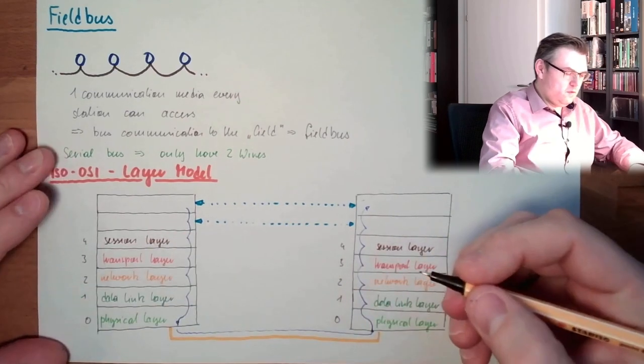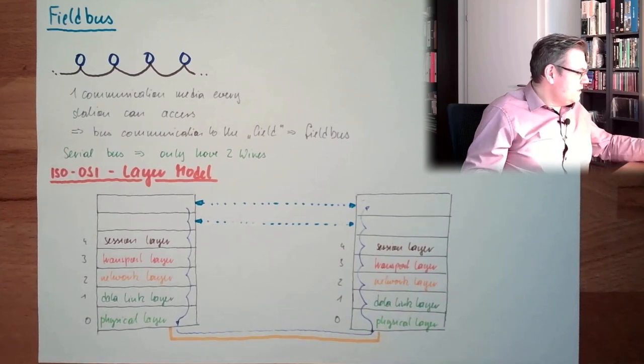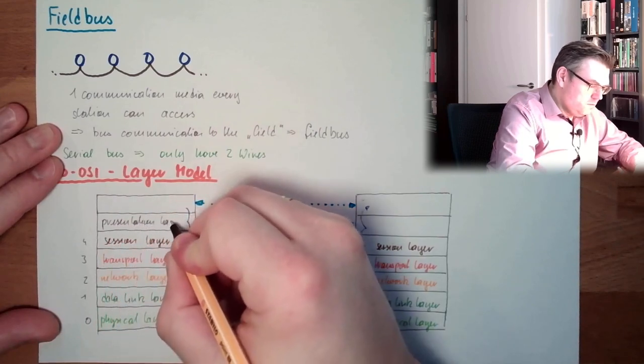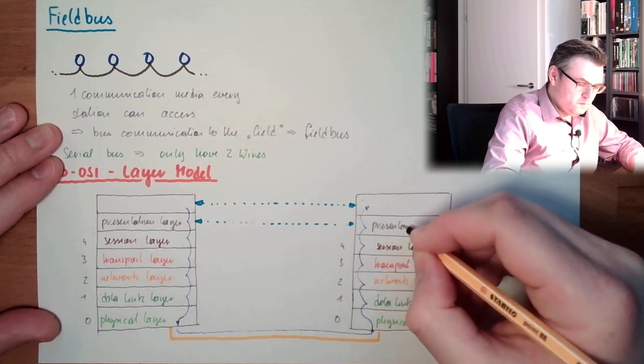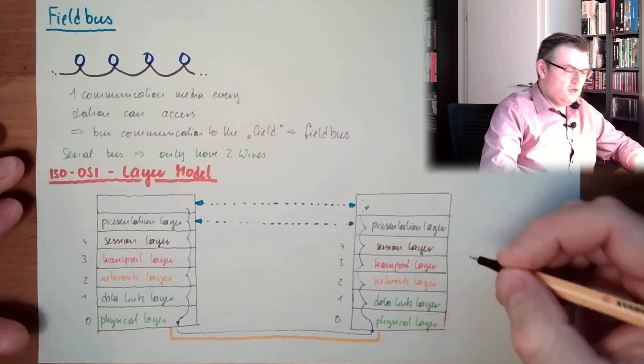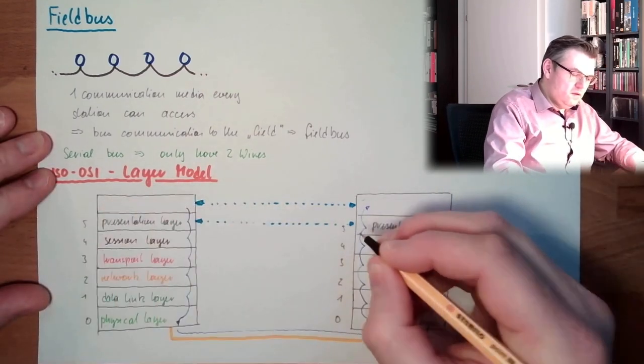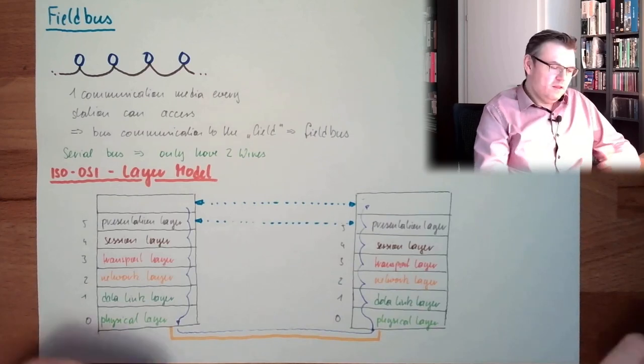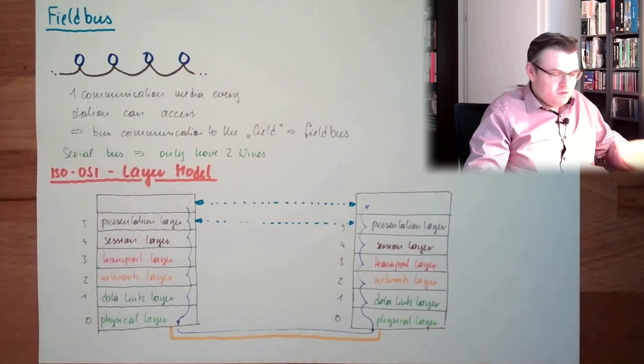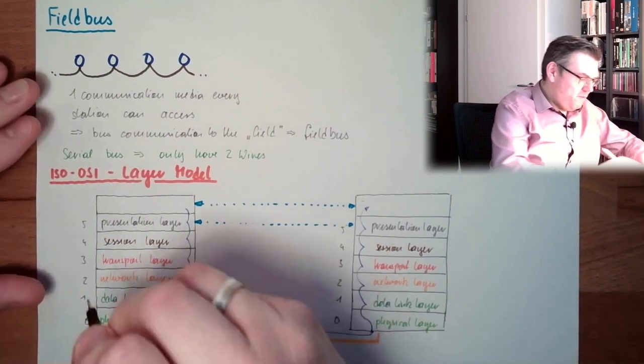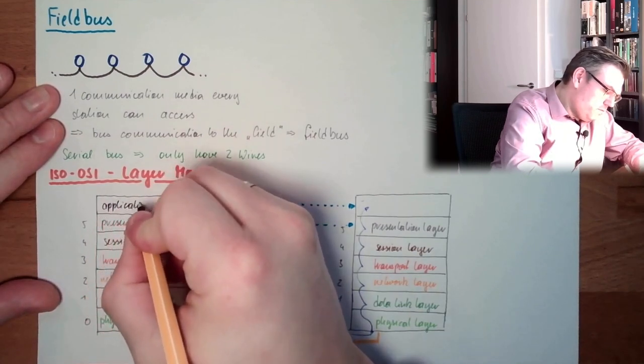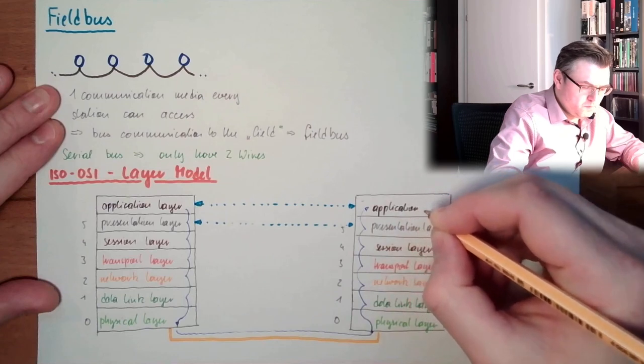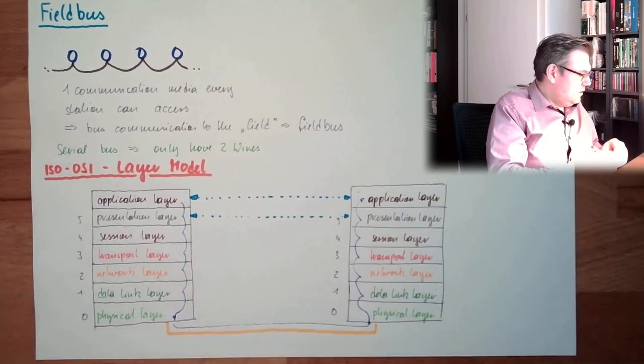The next one is the so-called presentation layer. This makes the presentation fit for the application. Several applications may store information in a different form. This presentation layer transforms this information. And finally, we have the application layer.